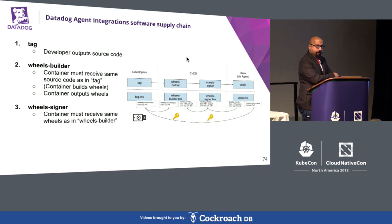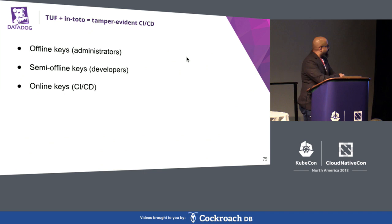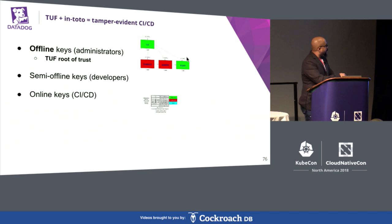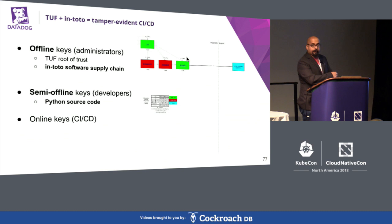In the second step, a container packages new integrations that developers ship. Every integration is packaged as a universal Python wheel — a zip file containing Python source code that works in both Python 2 and 3 with no compiled C extensions. In the third step, a container signs new TUF metadata for these wheels. On the end-user side, the Datadog agent transparently downloads this metadata and verifies that the source code inside the wheel contains exactly what one of our developers produced. We use TUF to bootstrap how every part of the system is to be trusted, using offline keys to securely distribute the root of trust.